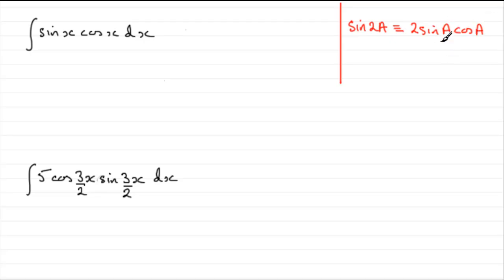And if we rearrange this by dividing both sides by 2, can you see that you'll have sin a cos a. Sin a cos a is going to be identical to a half sine of 2a. And it's this identity that we use.